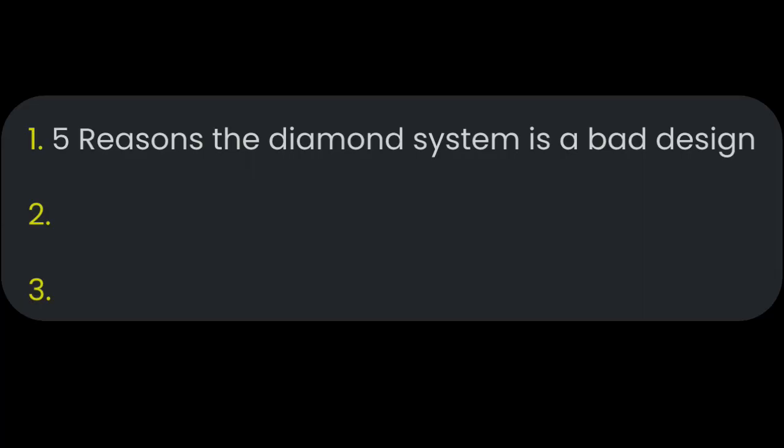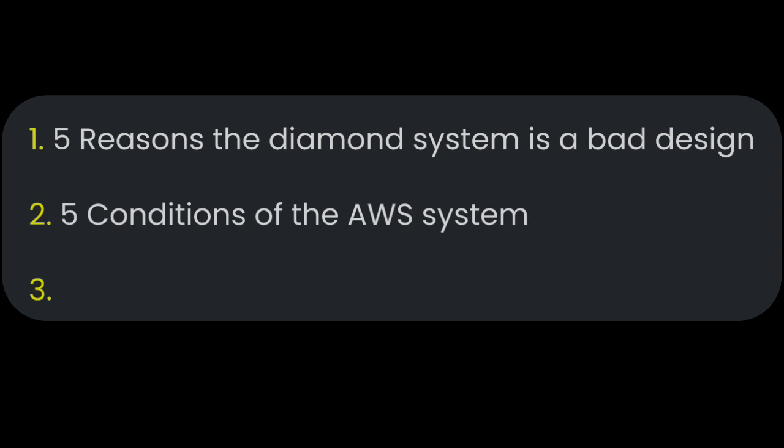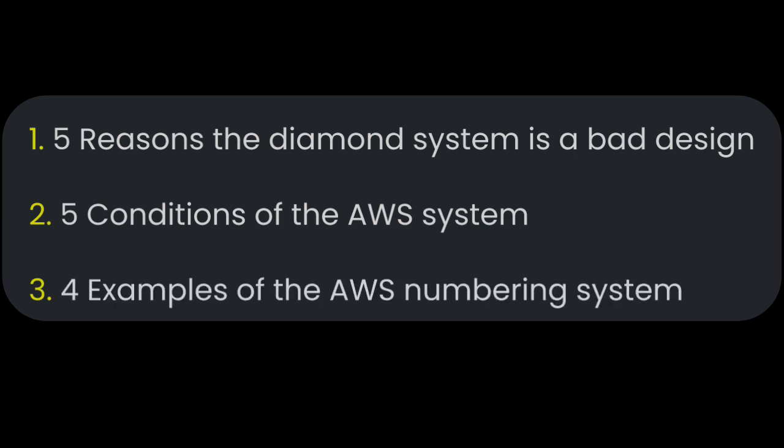I'm going to show you 5 reasons that the Diamond System is a really bad design and we're kind of working around its flaws when we use it. Second, I'm going to show you 5 conditions of the Aim With Speed Numbering System that I think are really important for a good way to number the rails. And finally, I'm going to show you 4 examples of using the Aim With Speed Numbering System.